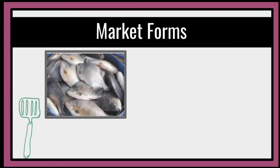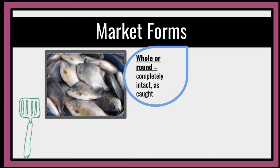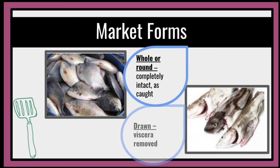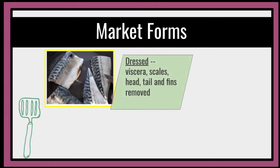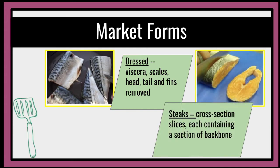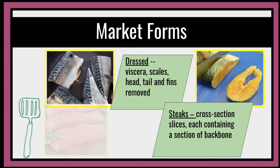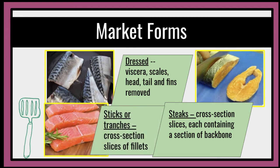Market forms of fishes. We have the whole or round — they are completely intact as caught. We also have the drawn — the viscera are removed. Viscera means the body parts of the fish. The viscera, scales, head, tail, and fins are removed. We also have the steaks, wherein the cross-section slices each contain a section of backbone. And we have the sticks or tranches, which are cross-section slices of fillets.